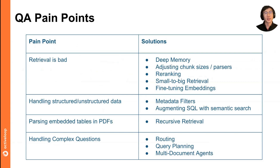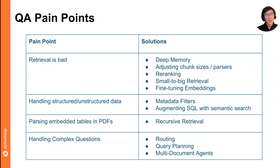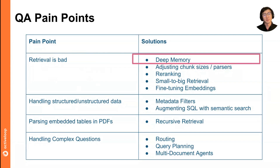Being able to handle structured and unstructured data is another issue — users often have not just a massive text corpus, but also structured annotations on top of that data, and it's unclear whether to put it in a SQL database or a vector database. There's also parsing embedded tables or complex objects within complex documents, like tables and graphs in PDFs, which requires more sophisticated ingestion and retrieval than naive top-K RAG. Lastly, users want to ask multi-part questions that require the LLM to reason over different steps, and there are techniques ranging from easy to hard to increase sophistication and answer more advanced questions.